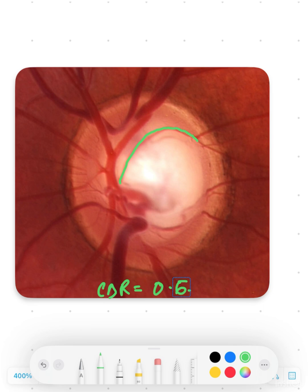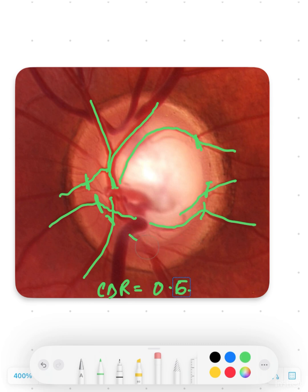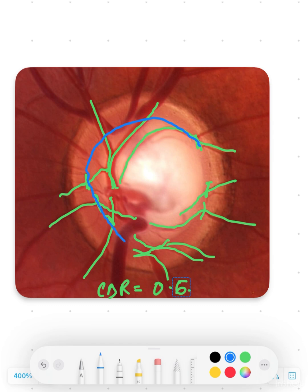We have a vessel arising here bending outwards somewhere here, another vessel not really bending anywhere, another vessel going out straight, a vessel bending at this point, a vessel going along the slope of the cup and bending right here, this vessel bent right here, and a few vessels bent like this major vessel here. When we join all these bends, it actually comes up to a CDR of 0.85.